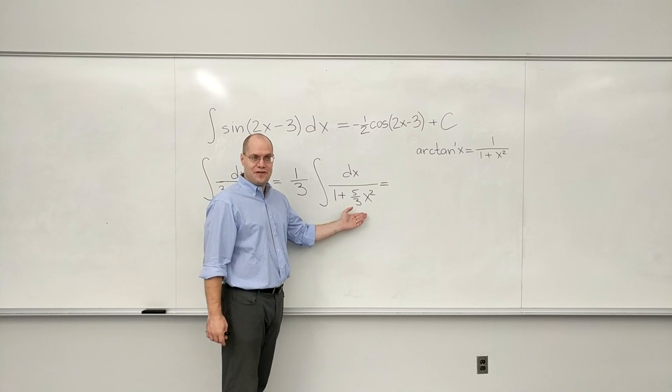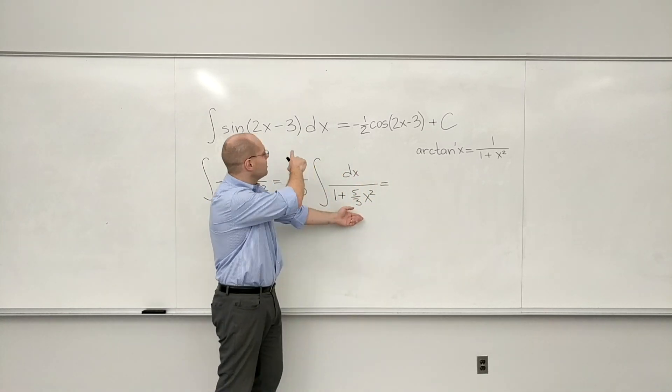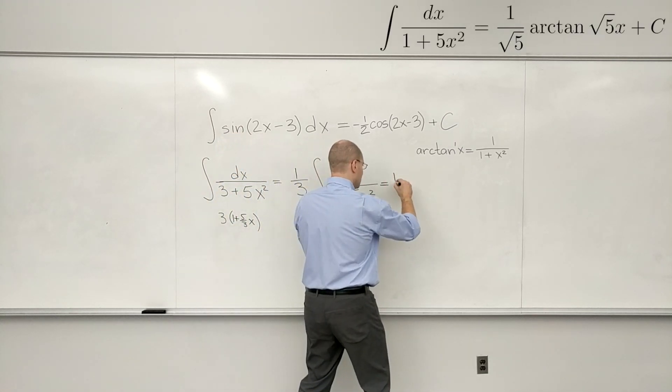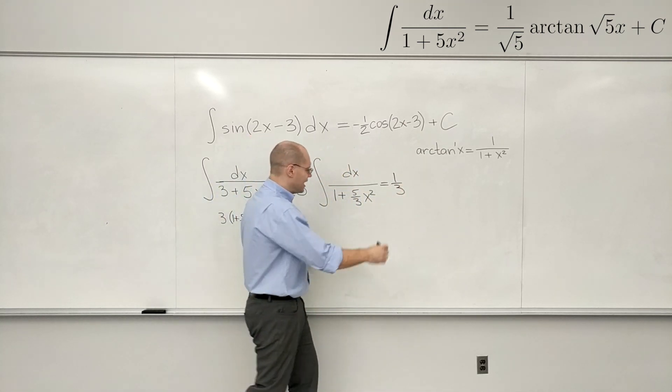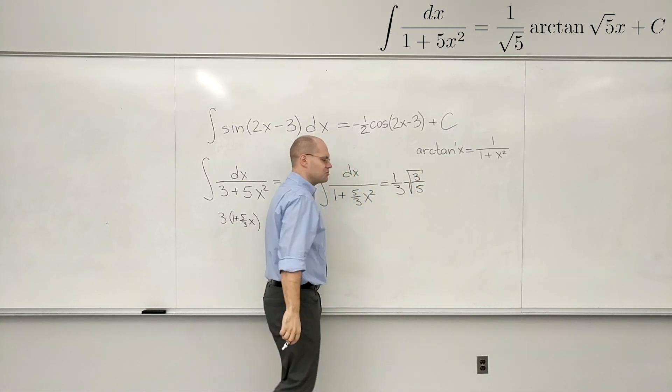Except instead of 5, I have 5 thirds. So the answer becomes, simply because I remember what we did just a moment ago, the answer will be 1 third, which is this 1 third, times—I just know because we just did it, but that's the only reason why I know—3 over square root of 3 over square root of 5.